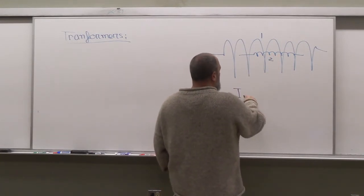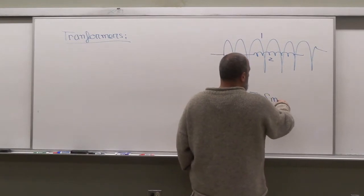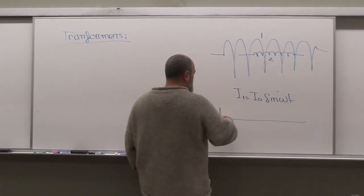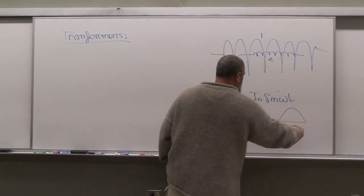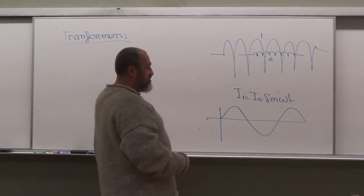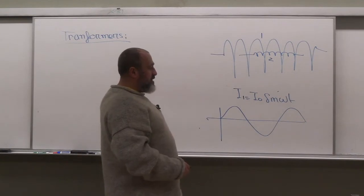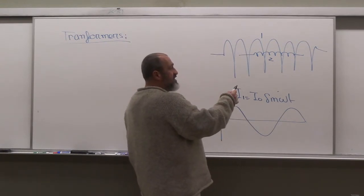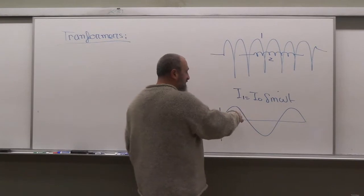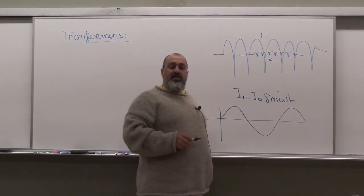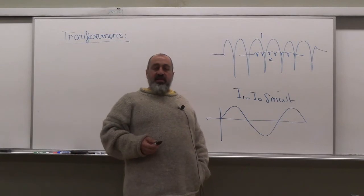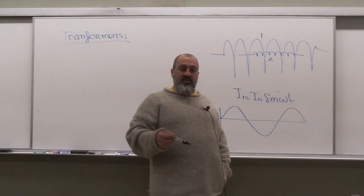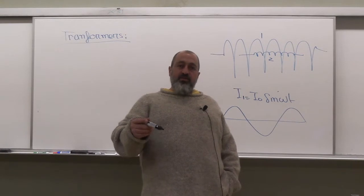If you have current I₁ = I₀ sin(ωt) in coil 1, think about what kind of plot you get for the current in coil 2. If you define a positive direction, the current in coil 2 will oppose the change in current in coil 1 — increasing and decreasing accordingly. You can use this to predict and plot it, but be careful about signs.